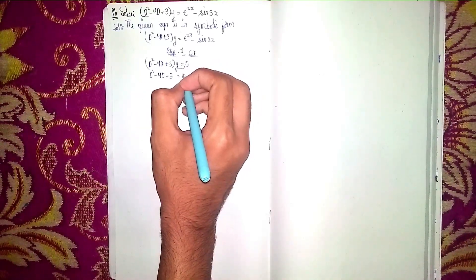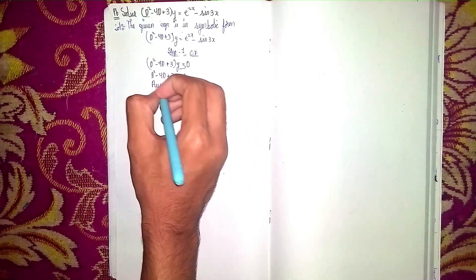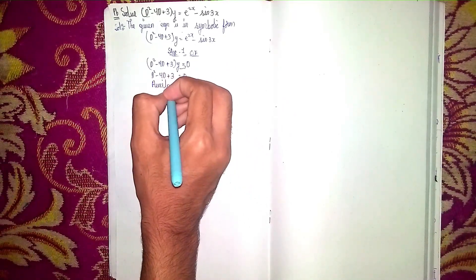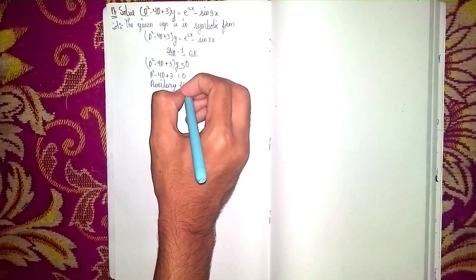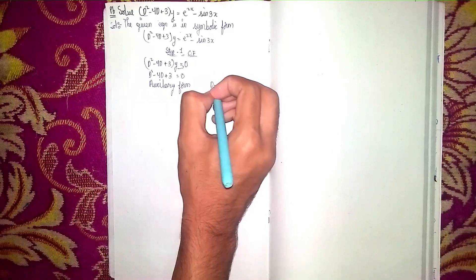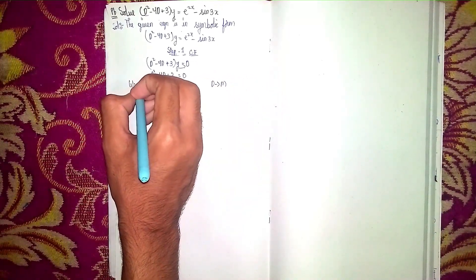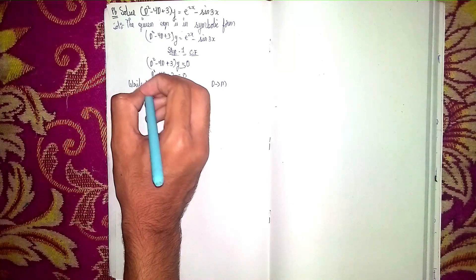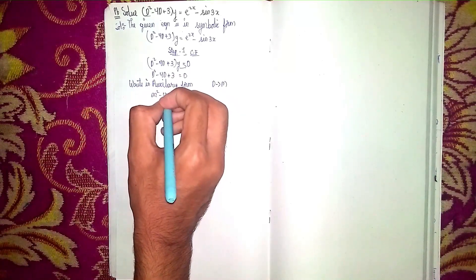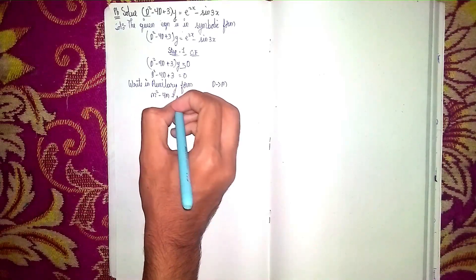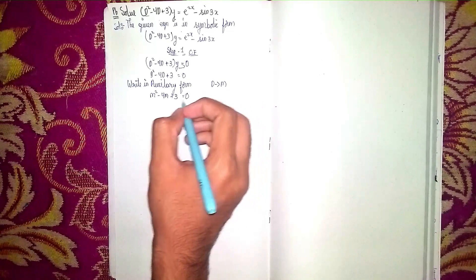Now write the equation in auxiliary form. Auxiliary form means instead of D, I write M to find the roots. So it becomes M² - 4M + 3 = 0.